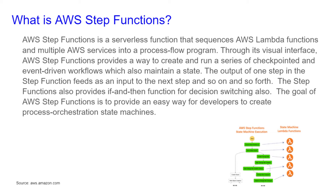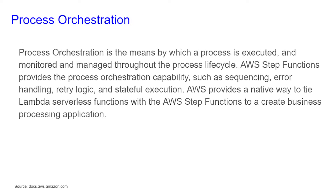The Step Functions also provide if and then function for decision switching. The goal of AWS Step Function is to provide an easy way for developers to create process orchestrated state machines. Process Orchestration is the means by which a process is executed and monitored and managed throughout the process lifecycle.